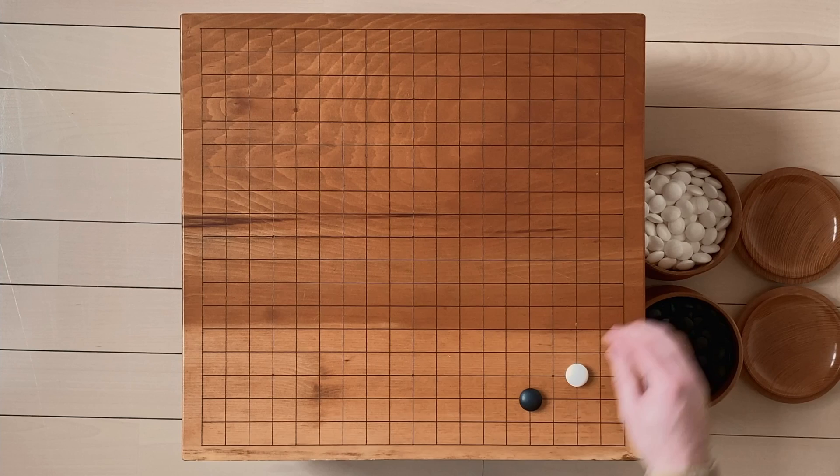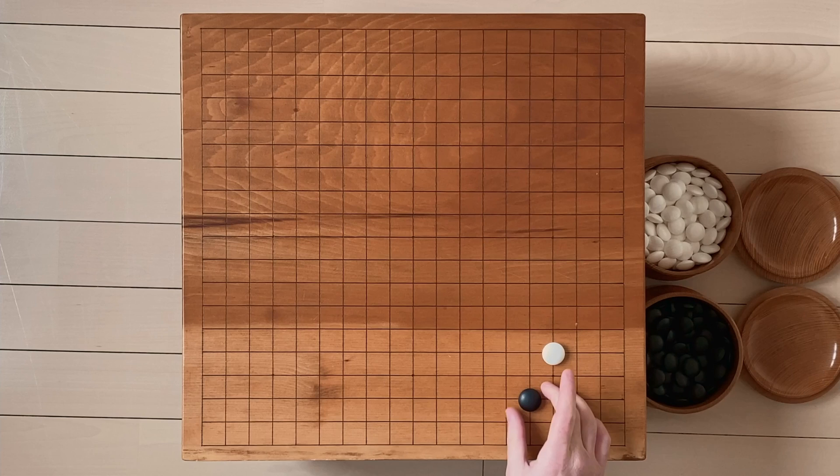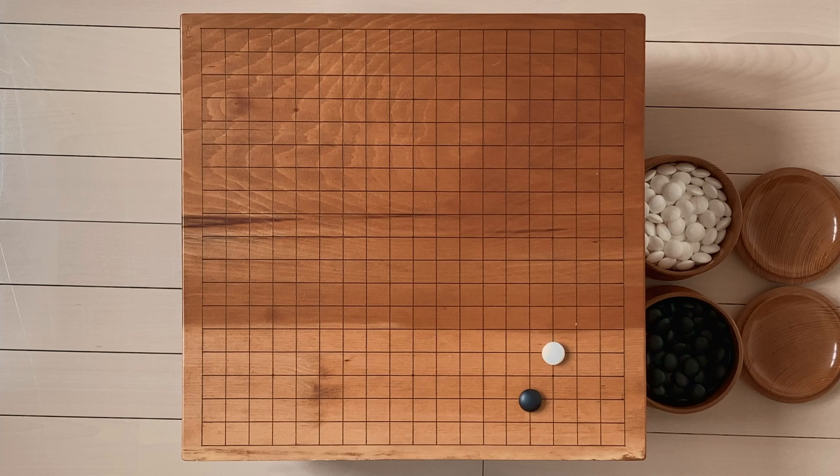Now, the other option that white has, instead of this low approach, is what's called the high approach. And you can see that it is. It's just higher than the last one, right? It's up on the fourth line. And so if you were black, how would you respond?